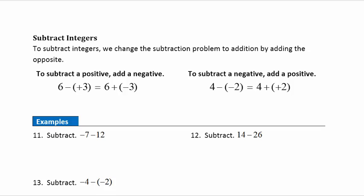To subtract integers, we change the subtraction problem to an addition problem by adding the opposite. To subtract a positive, we add a negative. For example: six minus positive three — first, change the subtraction sign to addition; then add the opposite, so positive three becomes negative three. To subtract a negative, add a positive. For four minus negative two: change subtraction to addition, then change negative two to its opposite, positive two. So four minus negative two has the same answer as four plus two, which equals six.